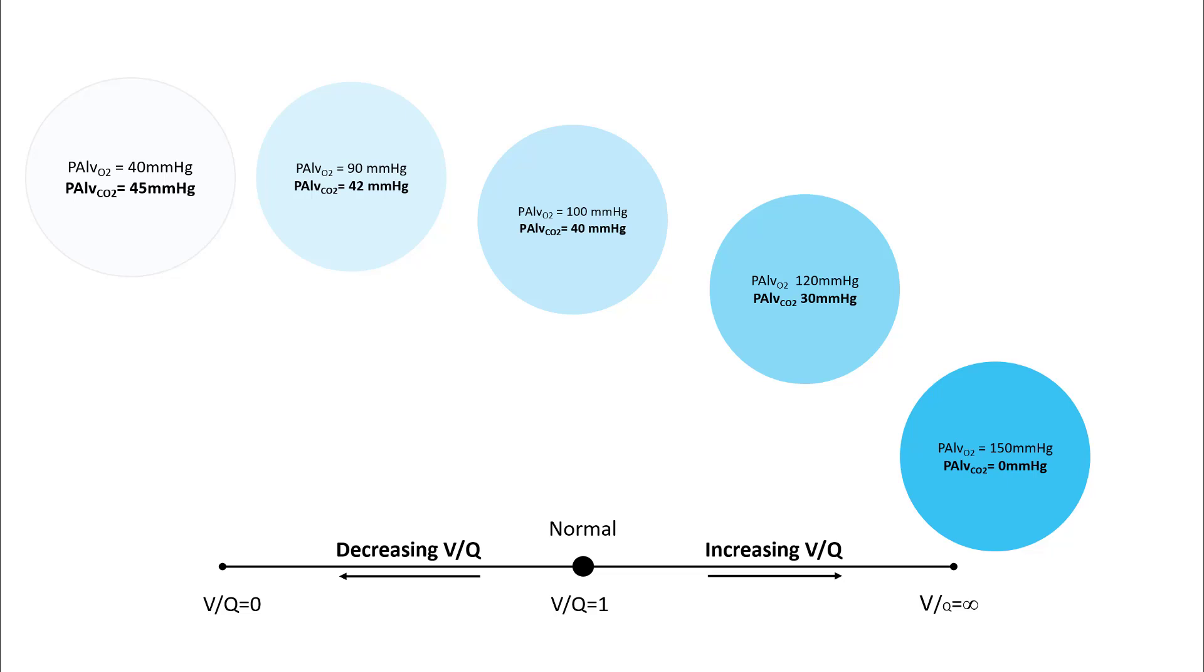You also have different alveolar CO2 depending on your VQ ratios. If you're dealing with a dead space alveolus with VQ of infinity, your alveolar CO2 is zero—that is similar to air. On the complete shunt side, your alveolar CO2 equals venous CO2, that's around 45. In a normal alveolus, you have alveolar CO2 about 40 millimeters of mercury. As your dead space component increases or your VQ increases, your alveolar CO2 slowly drops down.